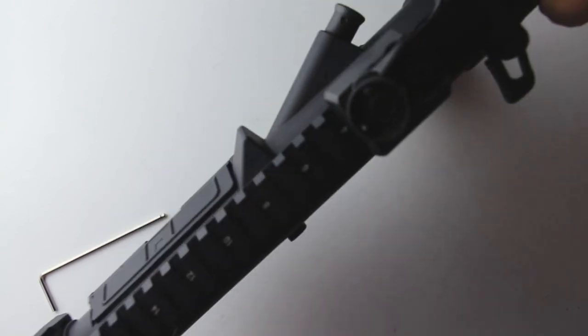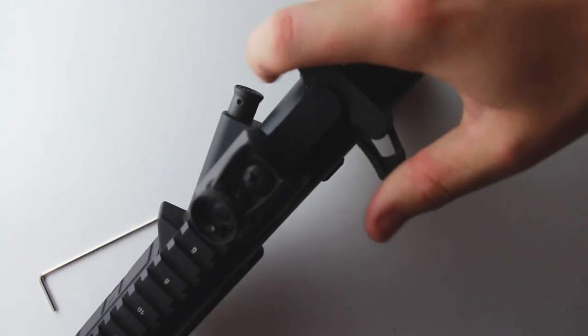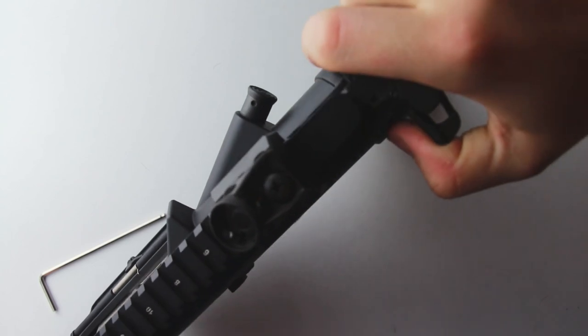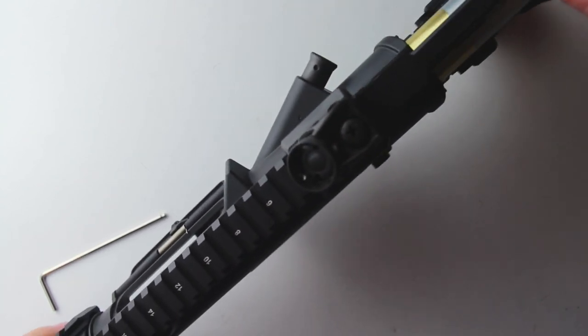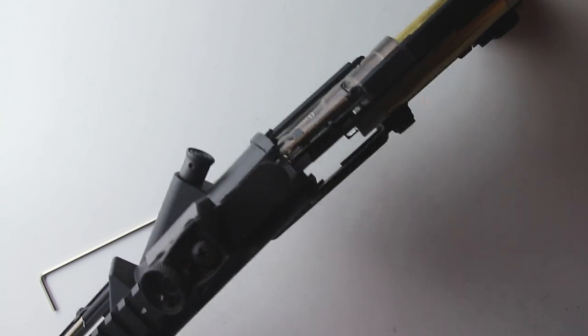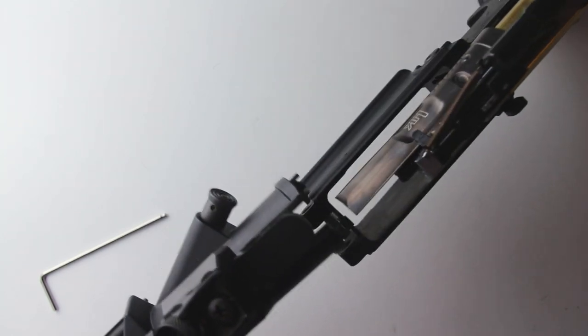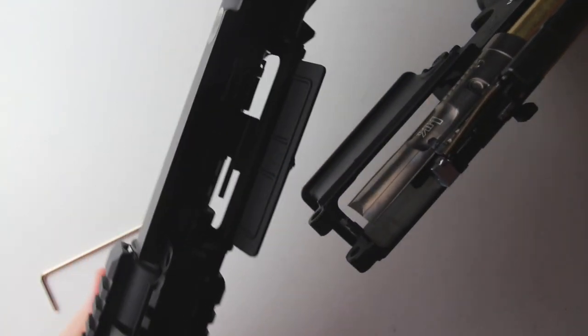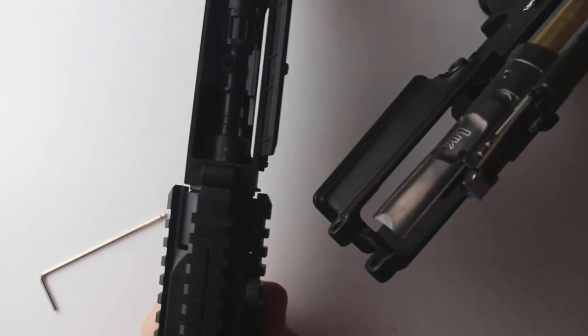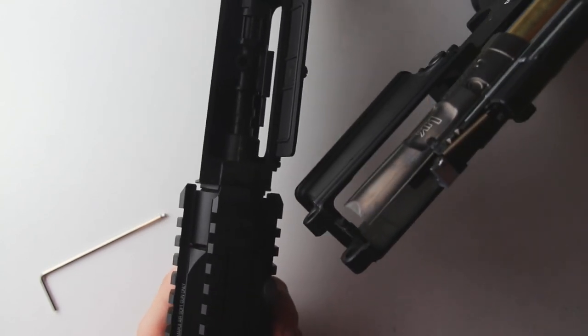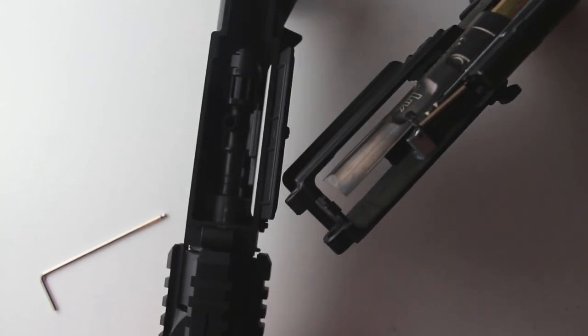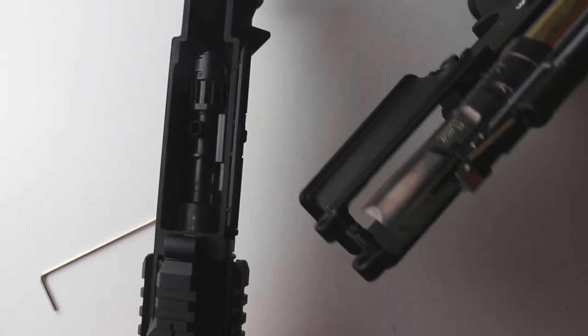There we go, that lovely little retaining clip on that, but the bolt itself is non-retained so I'll just set that to one side. I'm just going to pull the charging handle back a bit and then slide the upper receiver forwards. And there is the upper receiver.